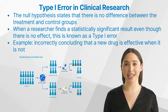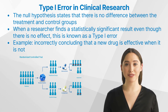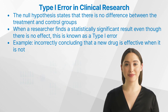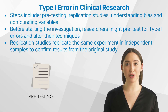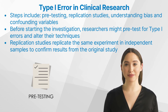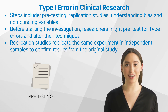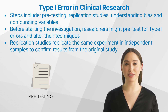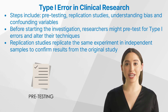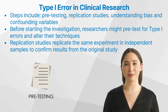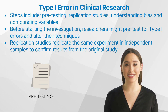It is important to understand type 1 error and take steps to reduce the risk of making this mistake, in order to ensure that clinical research studies are valid and reliable. An example of type 1 error in clinical trials includes incorrectly concluding that a new drug is effective when it is not. There are several steps researchers can take to reduce the risk of making a type 1 error.